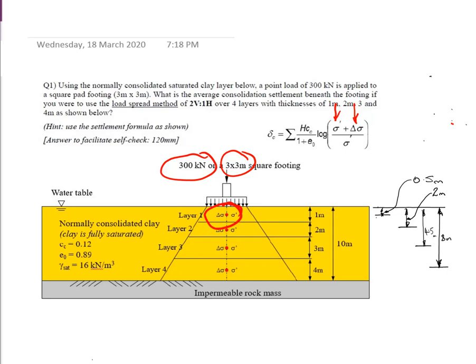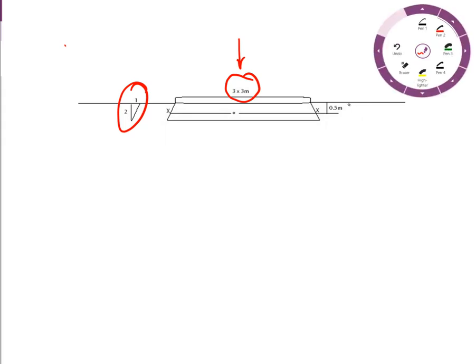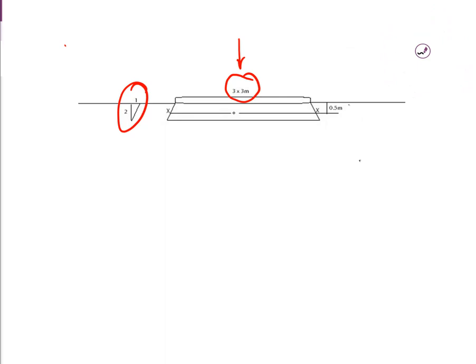Another thing that caused confusion is the dimension x1, x2, x3, etc. Looking at layer 1, x is marked on it — that's x1. The 3 meter by 3 meter footing has the load distributed downwards at a gradient of 2 to 1. At 2 meters deep, the stress zone is 1 meter wider than at the surface. We're working at the midpoint of the layer.